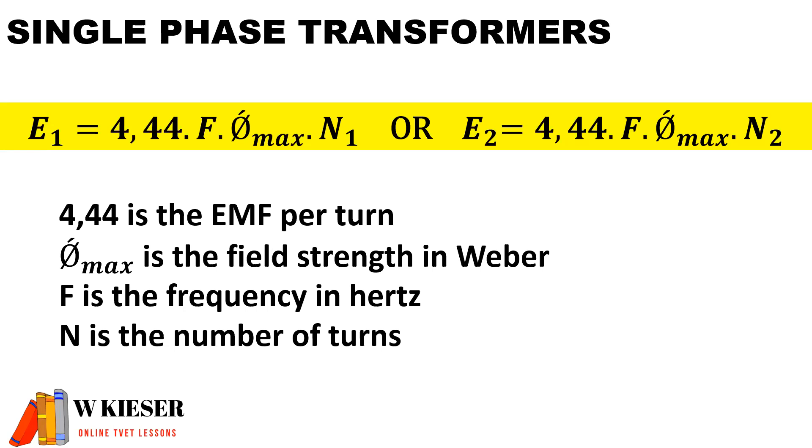Or we could calculate the EMF on the secondary side, which is 4.44 multiplied by the frequency in hertz, multiplied by the maximum flux measured in Weber, and then the number of secondary turns.